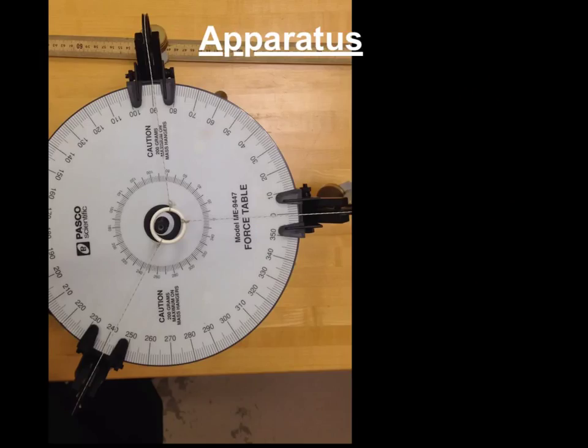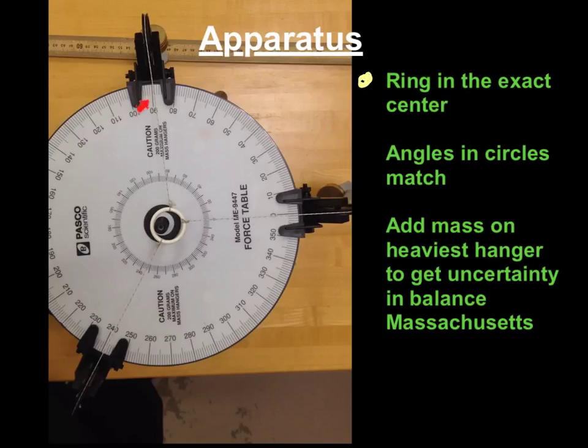This is what it looks like. You want this white ring to be in this little black circle, and you want it to be perfectly in that center. The other thing you want to double check is that the angle you read here, 90, is the same as the angle you read right here on the intersection. If it's not, just move that little string with your thumbnail so that the angle here and the angle here is the same.